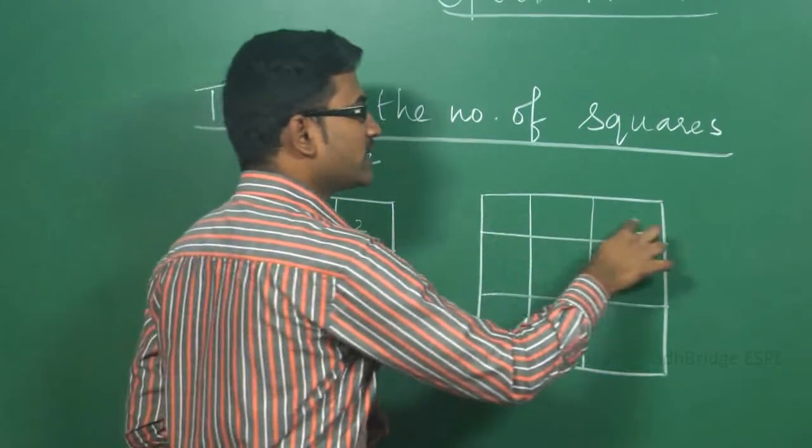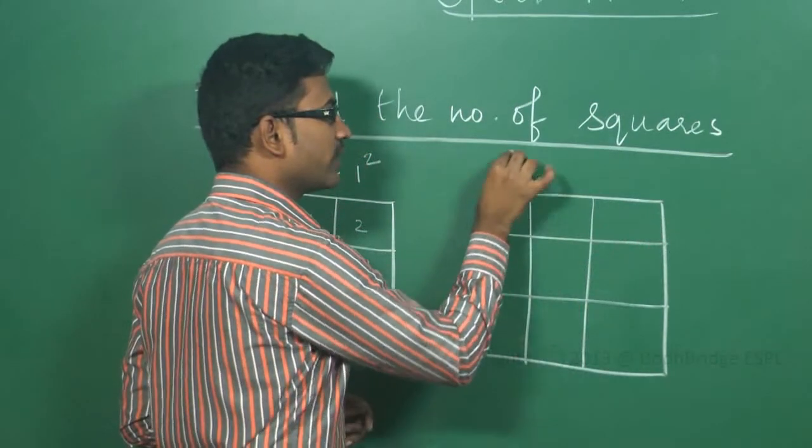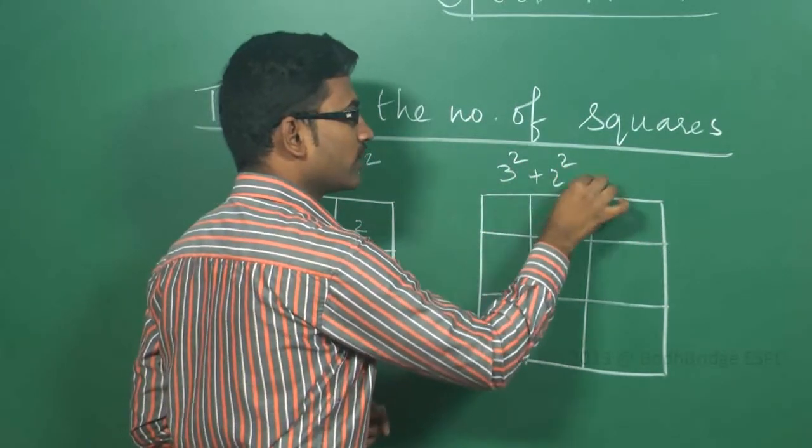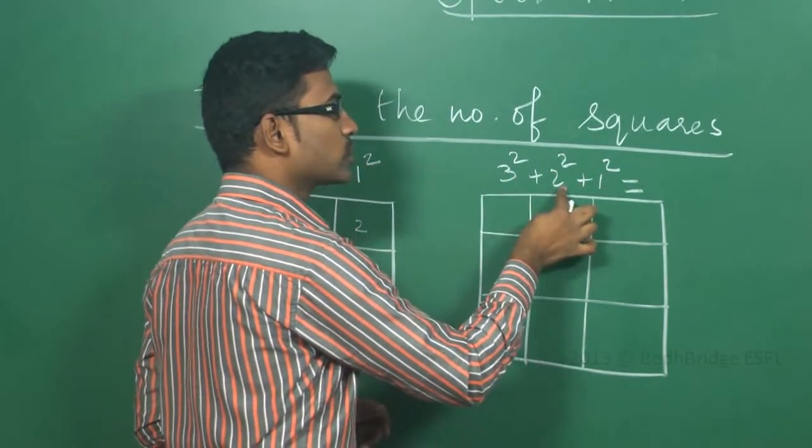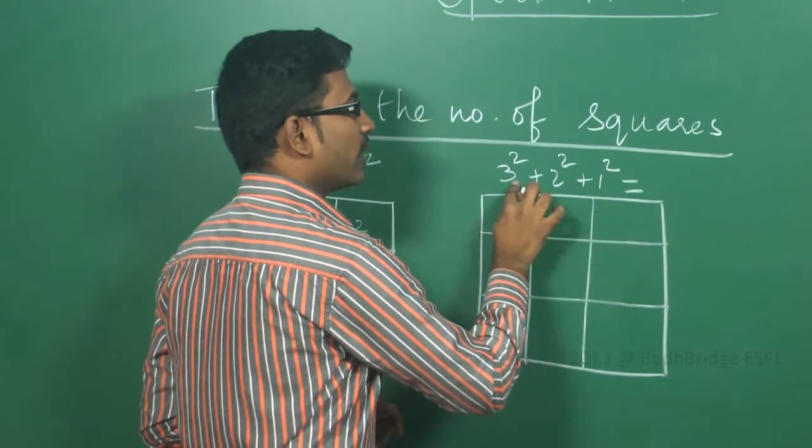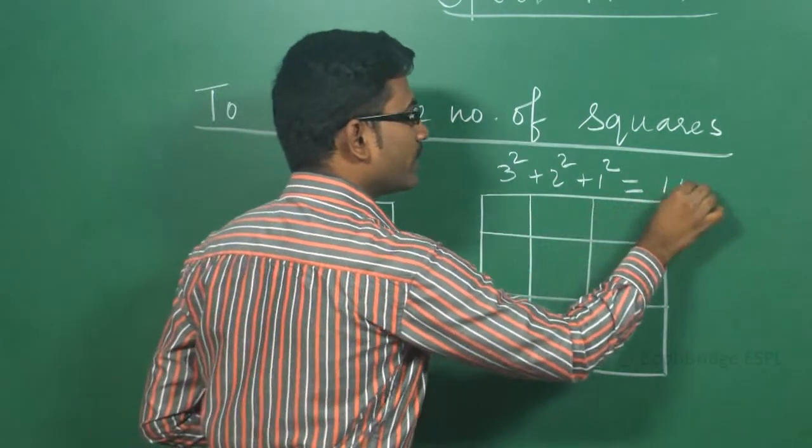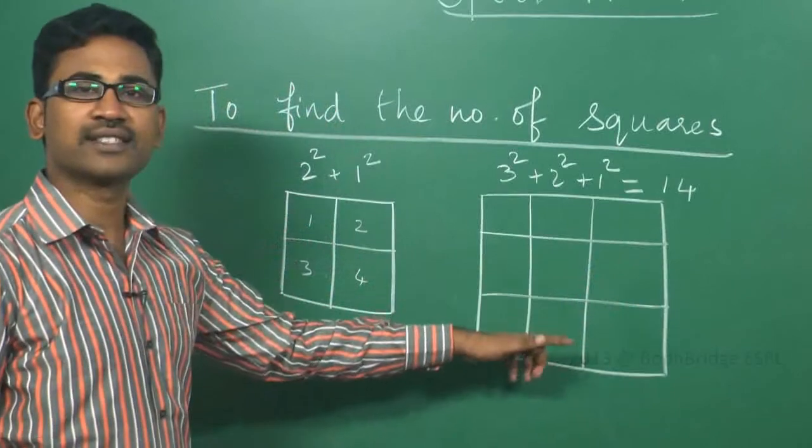In this, we are having 3 in a row. So, 3 square, 2 square plus 1 square, that is 3 square equals 9, 2 square equals 4, then 1. 9 plus 4 is 13, 13 plus 1 is 14. There are 14 number of squares in this.